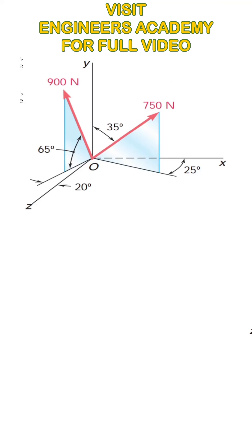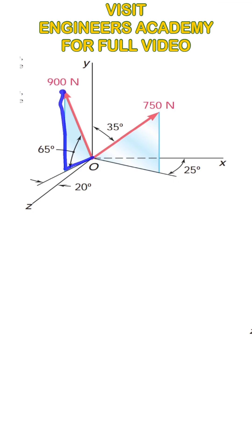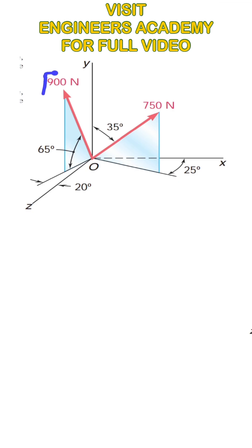We are given a 900 Newton force making a 65 degree angle with the XY plane, which we can also say is the ground. Considering this right angle triangle standing on the floor with the 90 degree angle here, we can resolve this 900 Newton force into its two rectangular components.